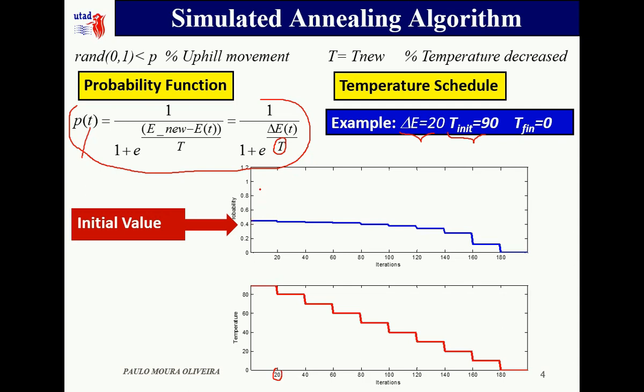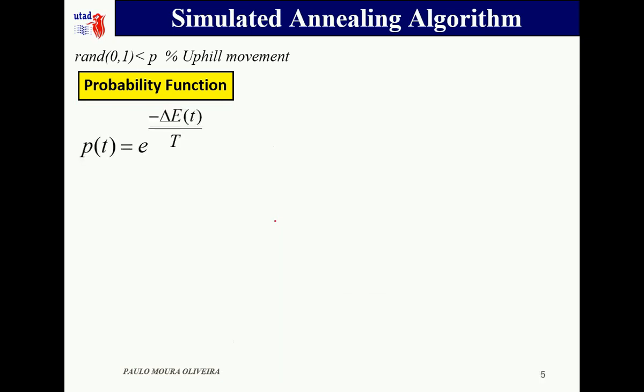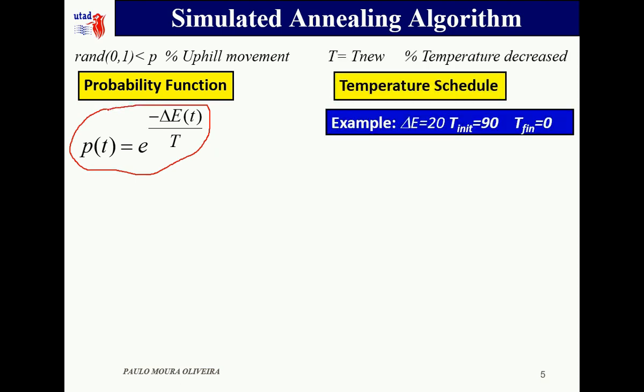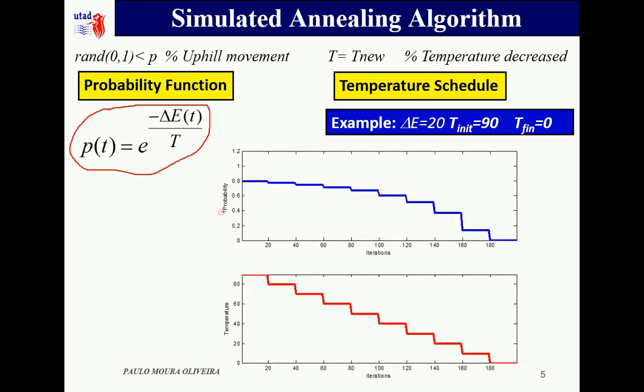If you now approximate this expression by this one, which is the most used and most common for simulated annealing, in the same conditions as before, what is the probability profile? We can see that the probability changes, not only in the profile but particularly in the initial value. The initial value becomes 0.8, so the chances of an uphill solution to be accepted are higher than before.